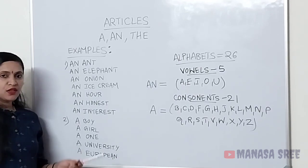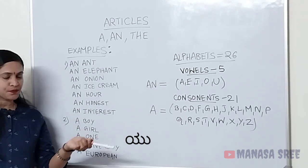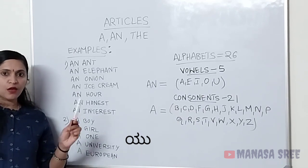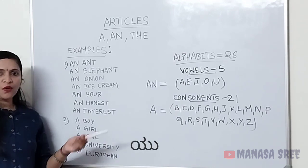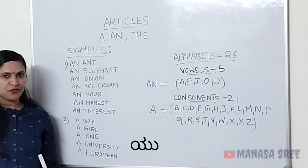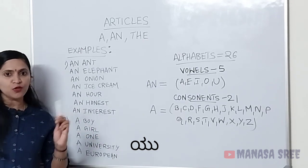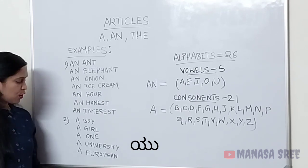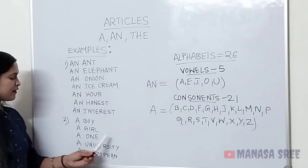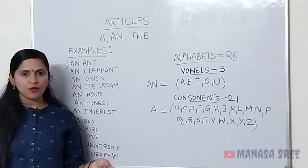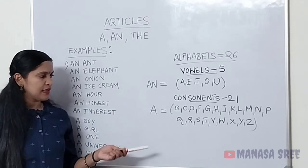A university — 'u' is a vowel letter, but the sound is 'yu' — consonant sound. U is a vowel letter, but consonant sound. So a university. A European — 'e' is a vowel letter, but the sound is 'yu' — consonant sound. So a European. Summary: a boy, a girl, a one, a university, a European — all consonant sounds, so 'a' article na use maatthi vi. Words starting with vowel sound get 'an'; words with consonant sound get 'a'.